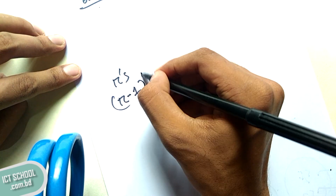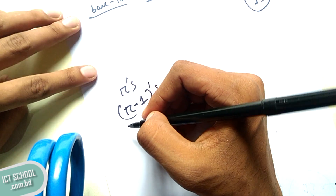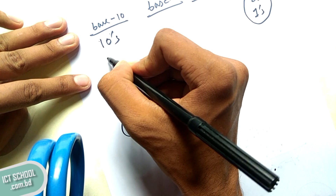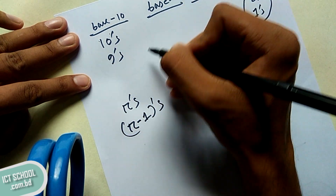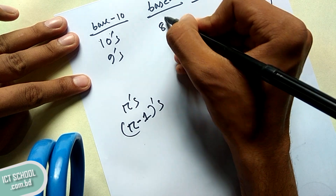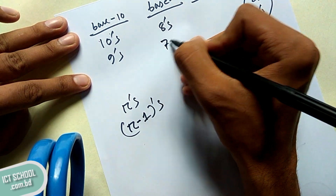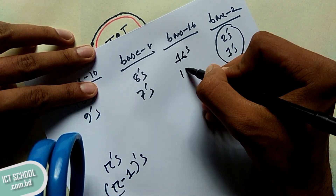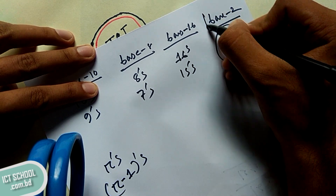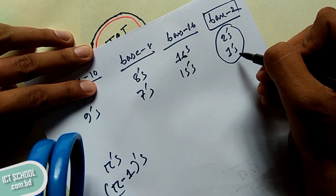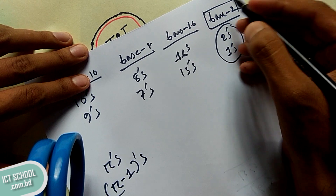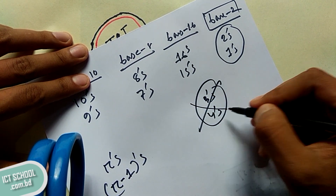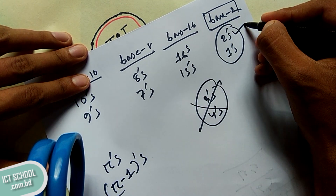Base 2 is 8 and we have 8s and 7s. Base 2 is 16 and we have 16s and 15s. Base 2 is 2 and we have 1s. We have to read that base 2 is 3s and 4s. Base 2 is 2s and 1s.